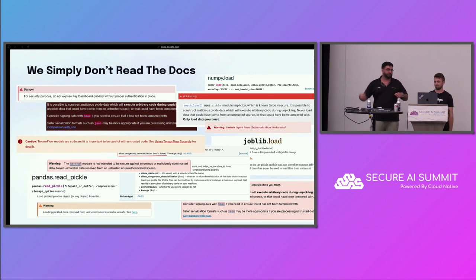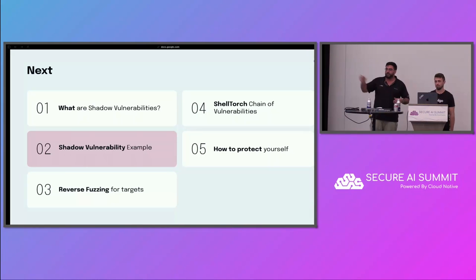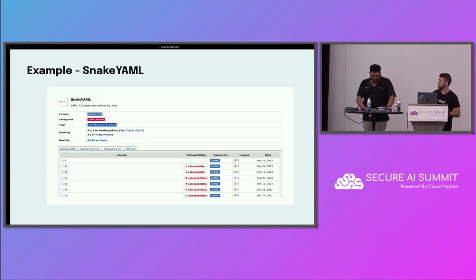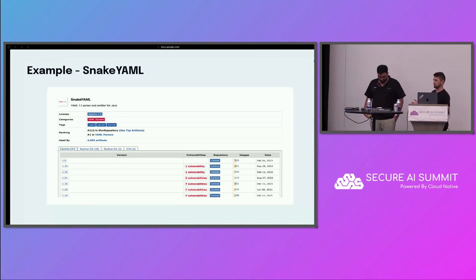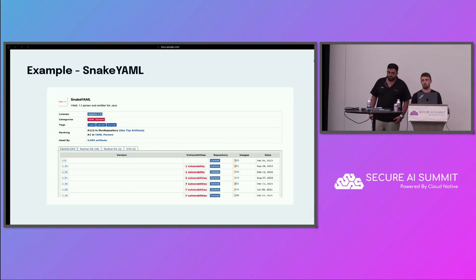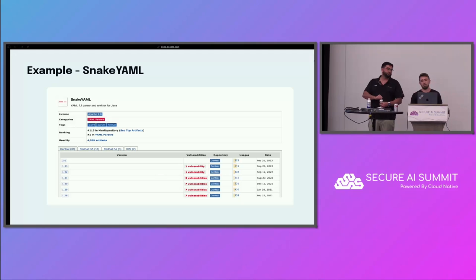Now let's dive into the first example — a very interesting shadow vulnerability we found in a famous library that led to the discovery of ShellTorch. This shadow vulnerability affects not only ShellTorch, which is around PyTorch and TorchServe, but also Apache Cassandra and Confluent Server, which is one of the most 25 targeted servers according to the NSA. If you ever use Java, you must have used SnakeYAML before, directly or indirectly. We work with YAML almost everywhere — Kubernetes is almost entirely based on YAML files. So if you want to work with YAML in Java, this is the go-to.